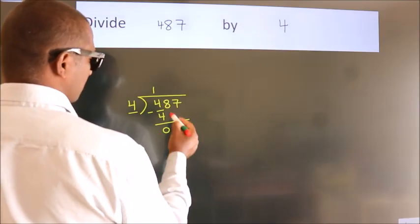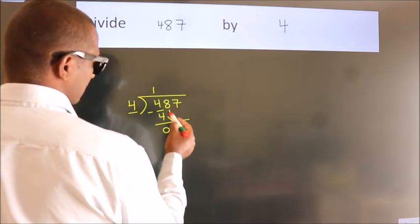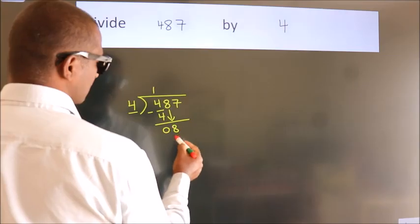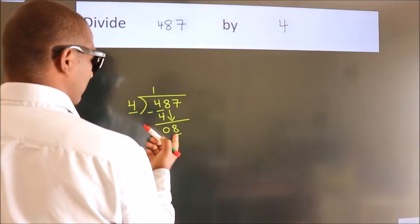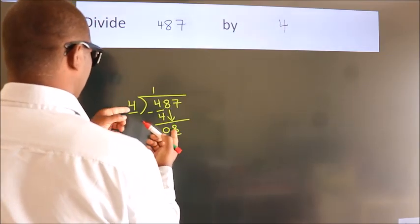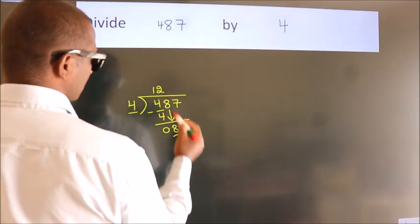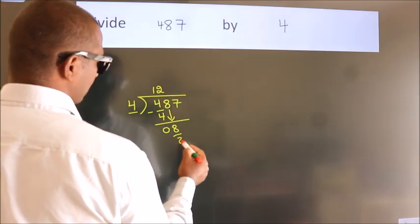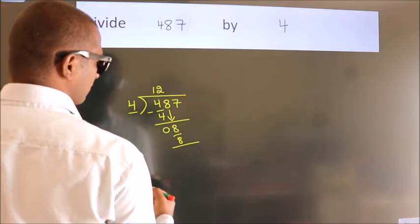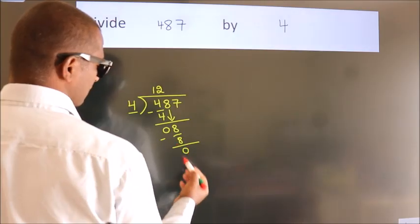After this, bring down the beside number — so 8 down, so 8. When do we get 8? In the 4 table — 4 twos is 8. Now we subtract, we get 0.